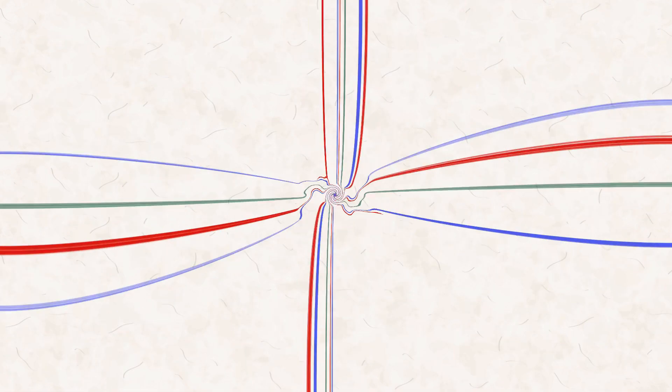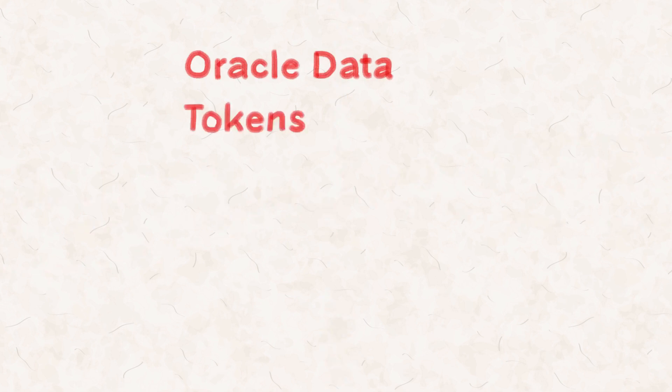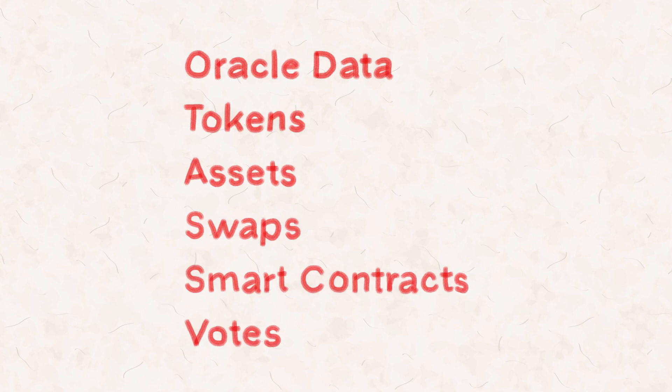Now you must be wondering, how is IBC so revolutionary if it basically connects chains? With the help of IBC, there is room for so much that can be shared on the Cosmos hub. Anything ranging from Oracle data, tokens, assets, swaps, multi-chain smart contracts, votes and soon, even NFTs.